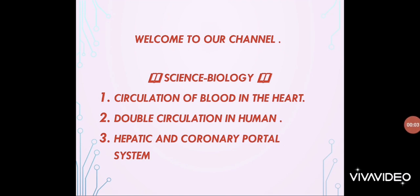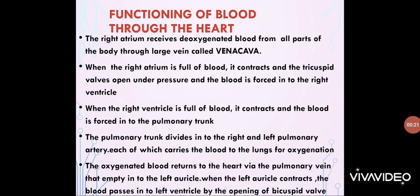In our previous lecture, we learnt about the structure of the heart. Now, how does blood flow through the heart? The right atrium receives deoxygenated blood from all parts of the body through large veins called vena cava — superior vena cava and inferior vena cava. When the right atrium is full of blood, it contracts and the tricuspid valves open under pressure, forcing blood into the right ventricle. When the right ventricle is full, it contracts and pumps blood into the pulmonary trunk, which divides into the right and left pulmonary arteries, each carrying blood to the lungs for oxygenation.